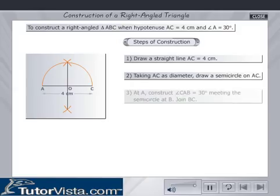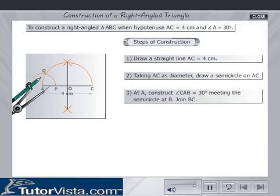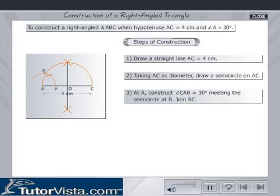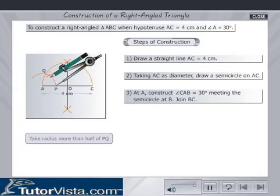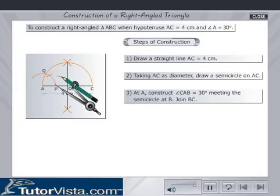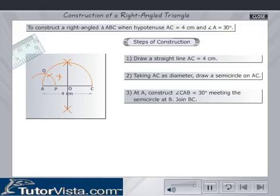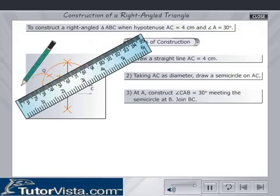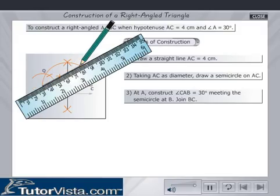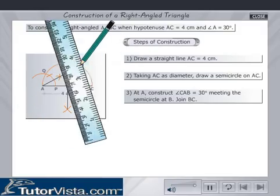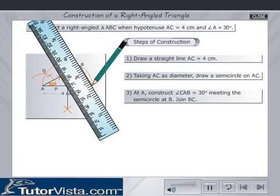At A, construct angle CAB equal to 30 degrees, meeting the semicircle at B. Join BC.